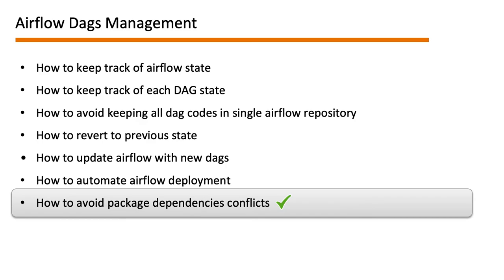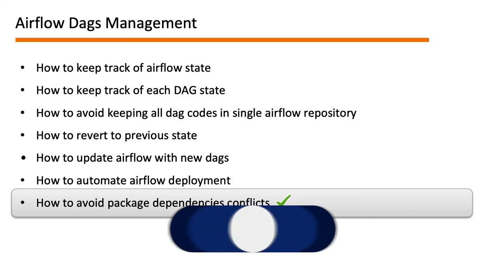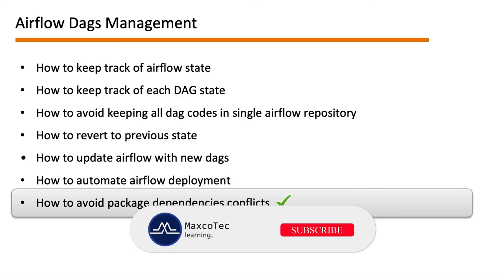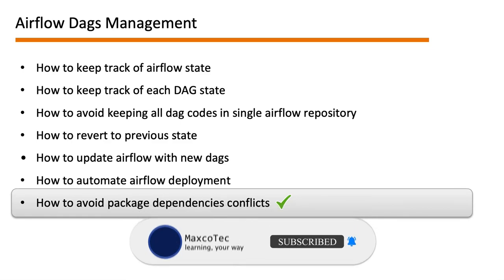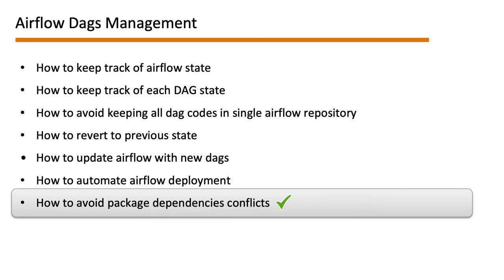That is how we manage and keep isolation between DAG package dependencies and Airflow dependencies. This does not mean we do not use other operators at all — we do use operators that do not require any additional packages beyond what is already installed in the Airflow image, such as the Python operator and HTTP operator. It is also worth keeping an extra Python package installed within the Airflow image if that package is used by more than 60 to 70 percent of your DAGs.